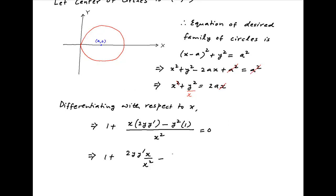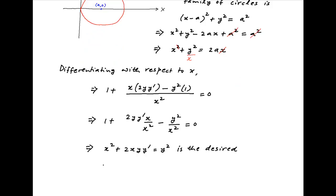This implies that 1 + 2xyy'/x² - y²/x² = 0. Or in other words, x² + 2xyy' = y², which is the desired differential equation of the given system of circles.